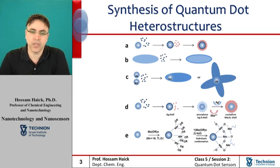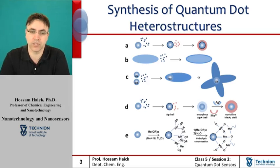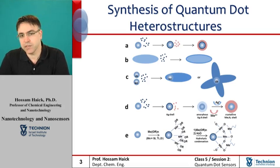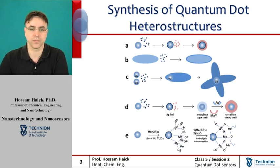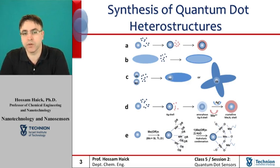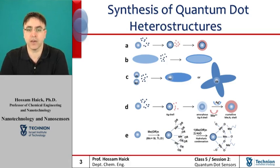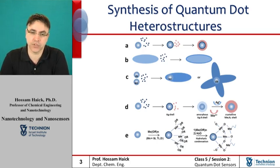The schematic presented on the screen shows mechanisms leading to the formation of core and shell nanocrystals. Panels A and C show direct heterogeneous nucleation and growth of the shell material onto preformed nanocrystal seeds with controlled shape and crystal structure. Panel D shows sequential heterogeneous nucleation and growth steps onto preformed seeds that involve deposition of an amorphous shell and its conversion to crystalline upon cation exchange.